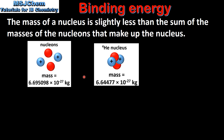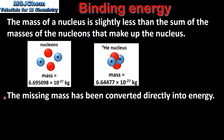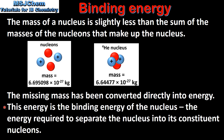For example, the mass of a helium nucleus is slightly less than the sum of the masses of the nucleons that make up the nucleus. The missing mass has been converted directly into energy. This energy is the binding energy of the nucleus, which is the energy required to separate the nucleus into its constituent nucleons.